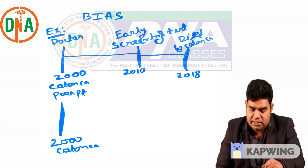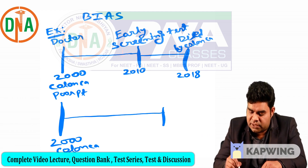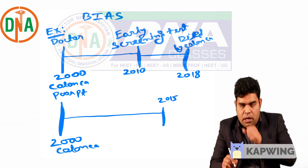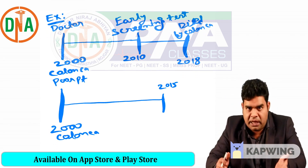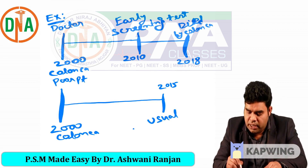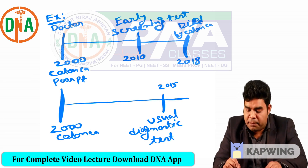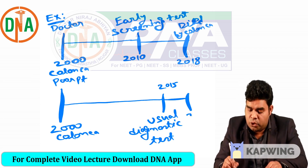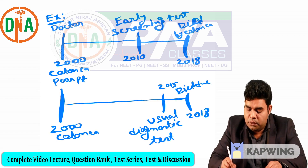This time he is a poor patient, so because he is a poor patient, he did not have the facility of an early screening test. He was diagnosed by the usual diagnostic test in 2015 — the usual diagnostic test for colon cancer is colonoscopy — so in 2015 he went through the usual diagnostic test.